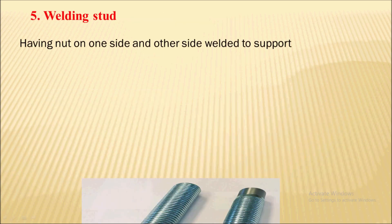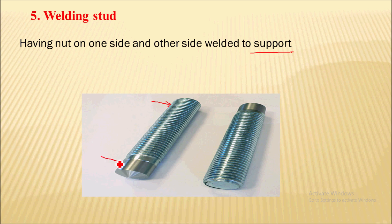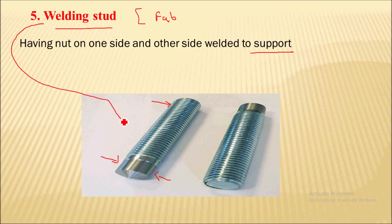Next is the welding stud. The welding stud has a nut on its one threaded end, and the other end is non-threaded. This non-threaded end can be welded to a support. That is why they are called welding studs. They are generally used in the fabrication of structures.